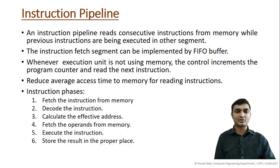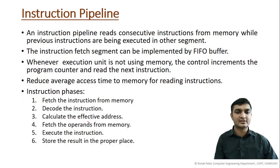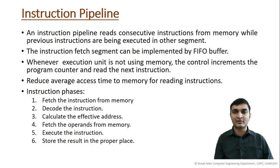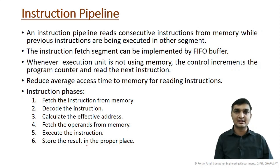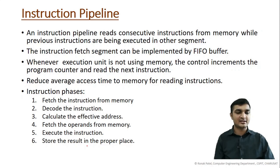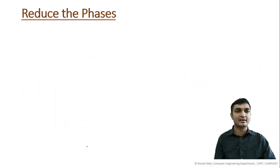After decoding, we calculate the effective address because there are different addressing modes possible. Next, we fetch the operands from memory or from a register, then execute the instruction — performing the operation on the operands — and finally store the result in the proper place. These are the six different phases that occur when we execute an instruction.